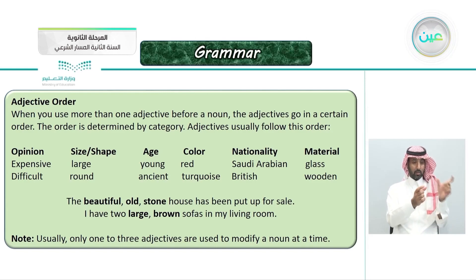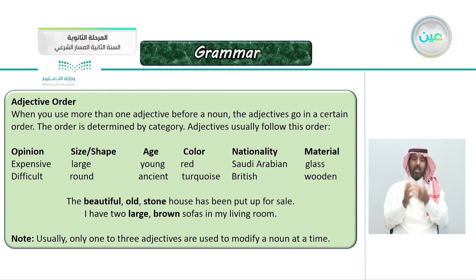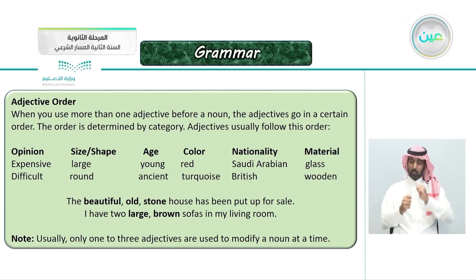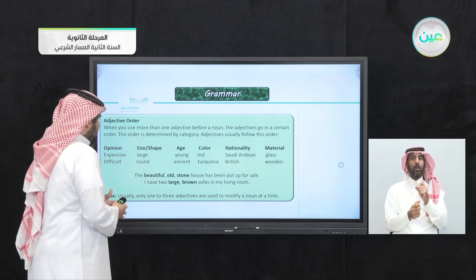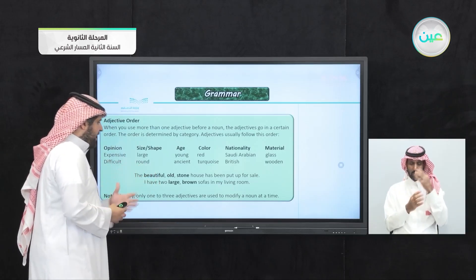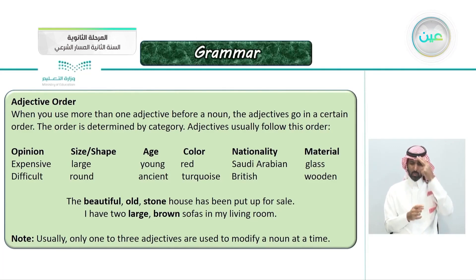The order is determined by category. Adjectives usually follow this order: opinion, size or shape, age, color, nationality, and material. For example, opinion: expensive or difficult — you're giving your own opinion. Size or shape: large or round. Age: young or ancient. Color: red or turquoise. Nationality: Saudi Arabian, British. Material: glass or wooden.